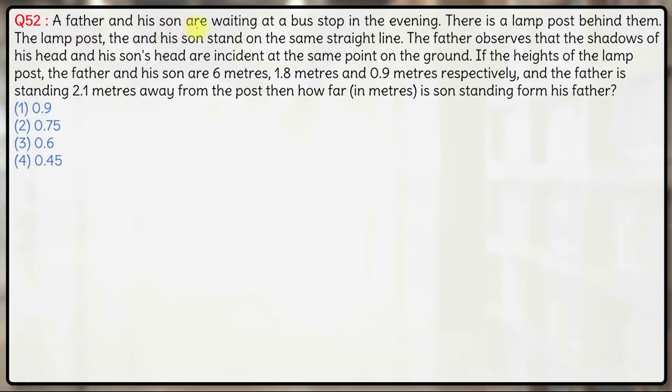In this question we have a father and his son waiting at a bus stop in the evening and there is a lamp post behind them. The lamp post will be obviously emitting light which will be casting a shadow of father and the son. So the lamp post, the son and the father...